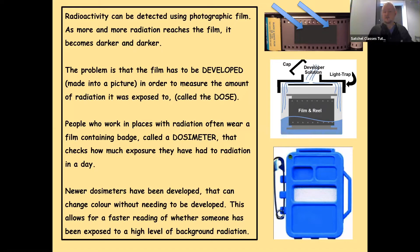Newer dosimeters have been developed that can change color without needing to be developed chemically. This allows for a faster reading of whether someone has been exposed to a high level of background radiation. There are also now digital dosimeters that can measure it with a digital readout and let people know instantaneously if they've been exposed to too much background, which then allows them to go and seek medical advice or treatment.